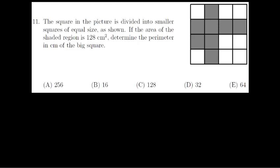Question 11 is showing us a four by four square. It's telling us that the square is divided into smaller squares. If the area of the shaded region is 128 centimeters squared, determine the perimeter of the big square in centimeters. So we've got two concepts featuring here: the area of the shaded region, and they're asking for the perimeter.